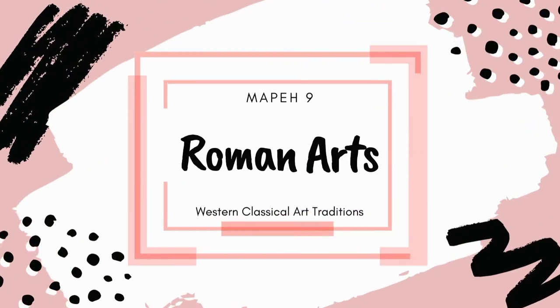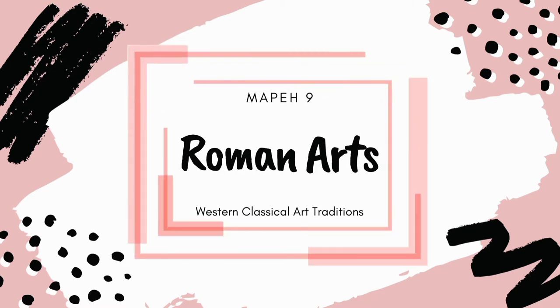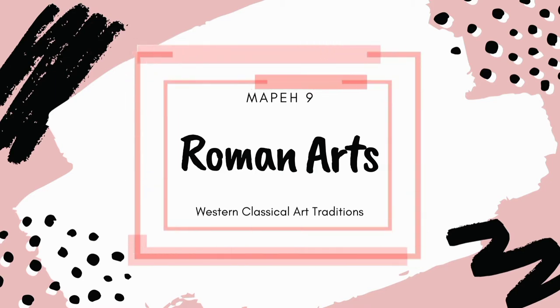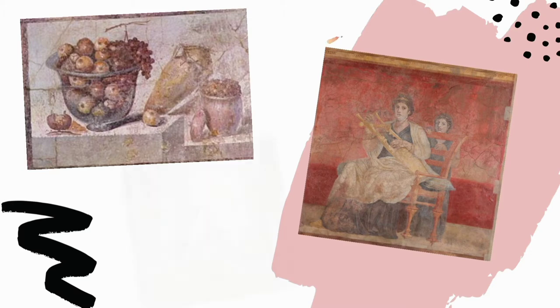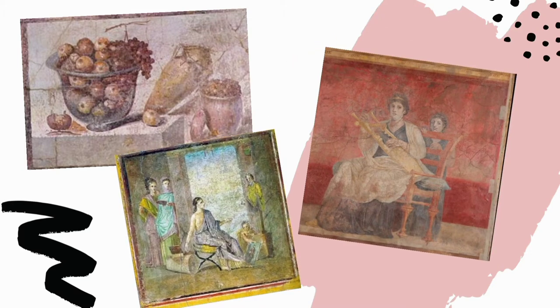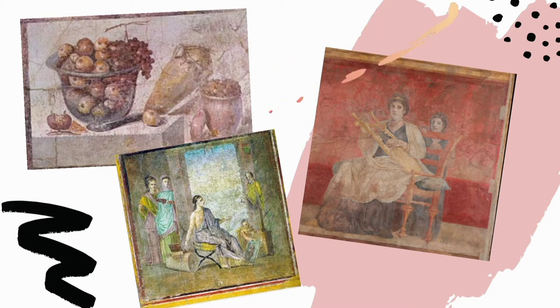This is part 4 of our topic on Western Classical Art Tradition. Centered in the city of Rome, the civilization of ancient Rome ruled much of Europe for over 1,000 years. The arts flourished during this time and are often used by the wealthy and powerful to memorialize their deeds and heritage.